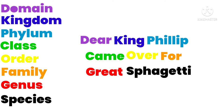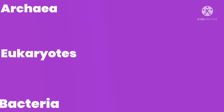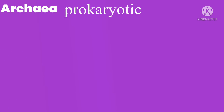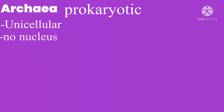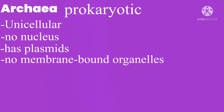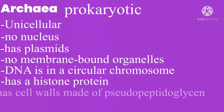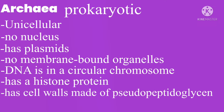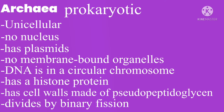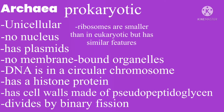Let's start with domain. There are three domains: domain Archaea, domain Eukaryotes, and domain Bacteria. For domain Archaea, they are prokaryotic. Its characteristic features are unicellular, has no nucleus, has plasmids which are circular strands of DNA, and no membrane-bound organelles. DNA exists in a circular chromosome with a histone protein. It has cell walls made of pseudopeptidoglycan, divides by binary fission, and its ribosomes are smaller than eukaryotic ribosomes, though it does have some eukaryotic ribosome features.